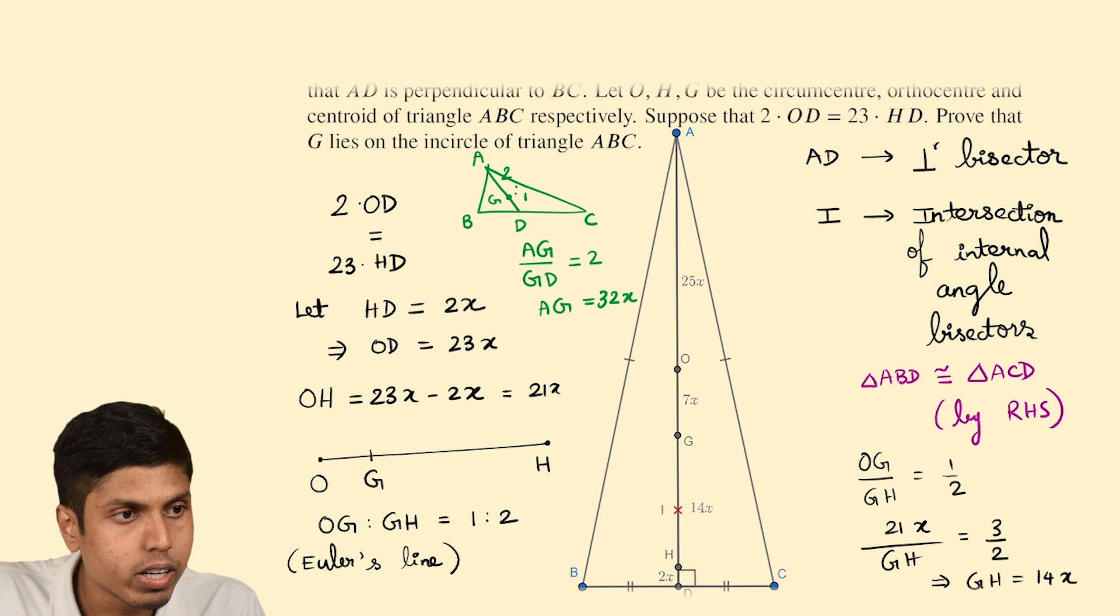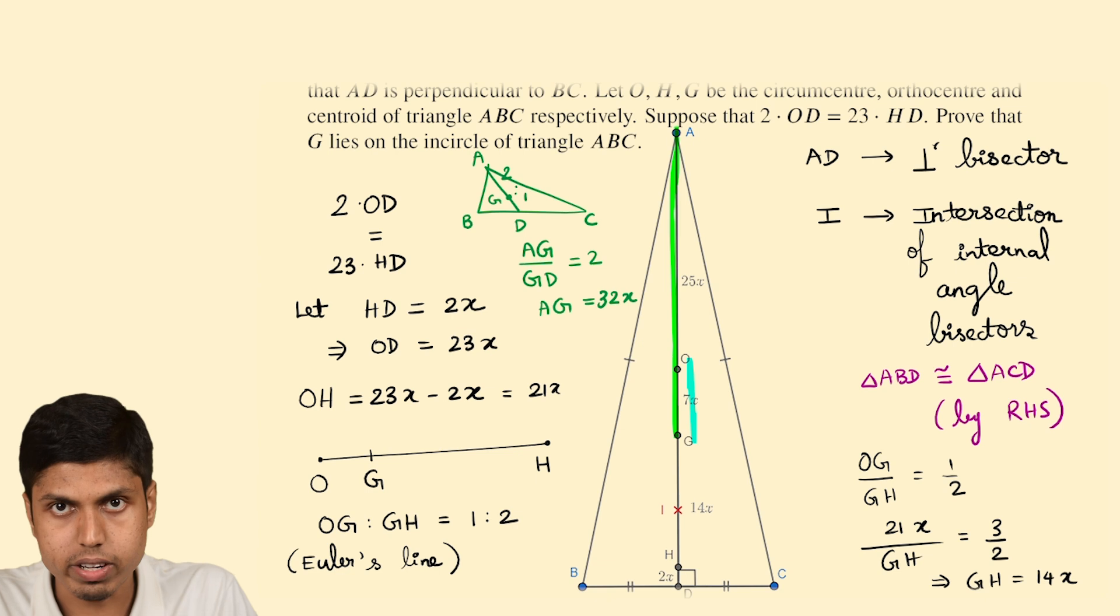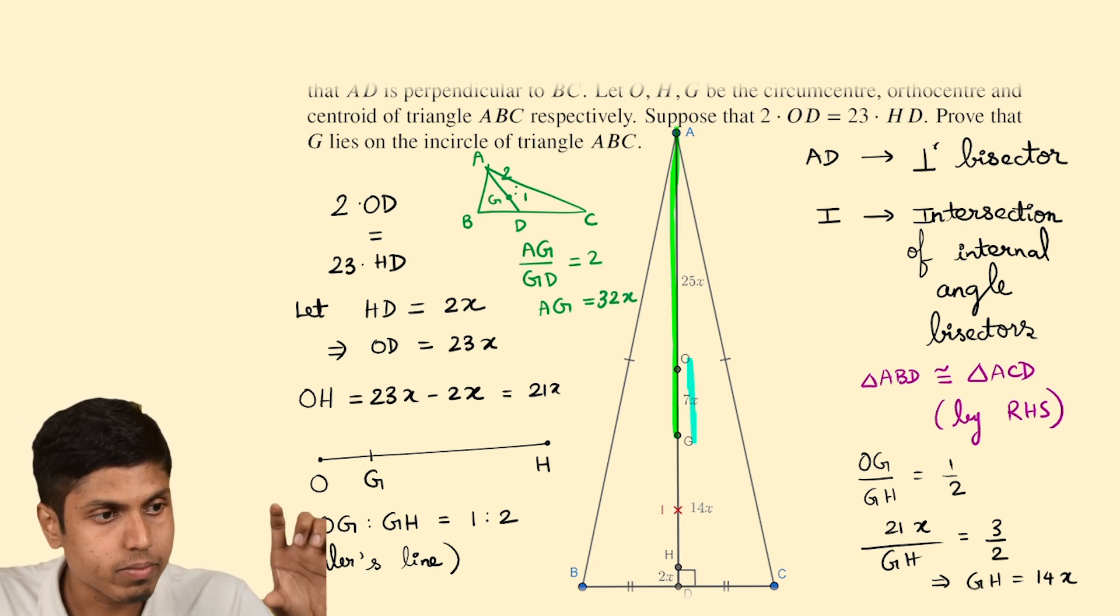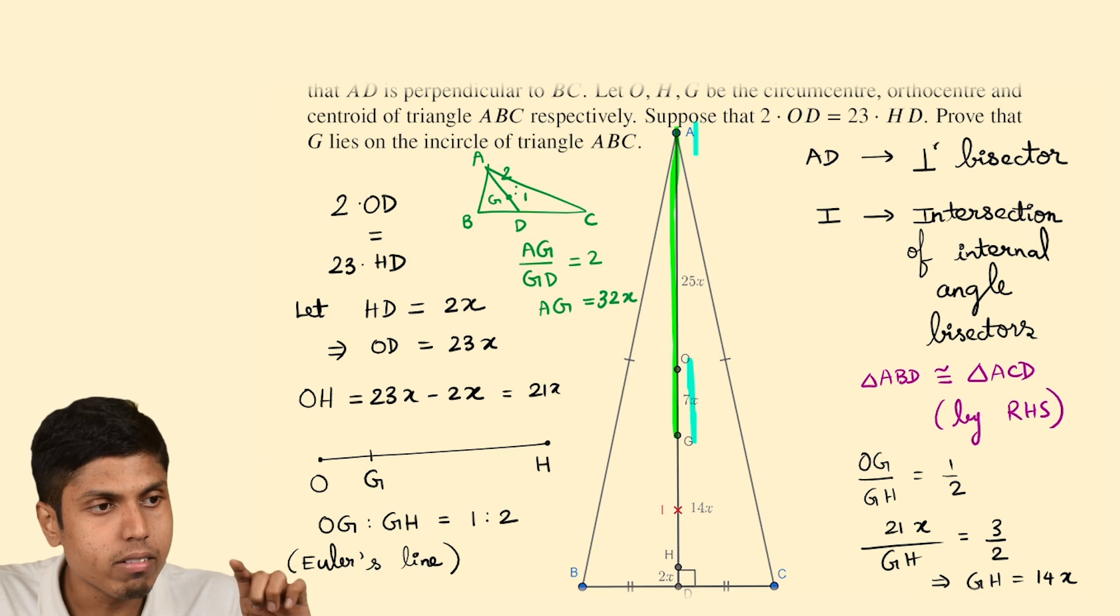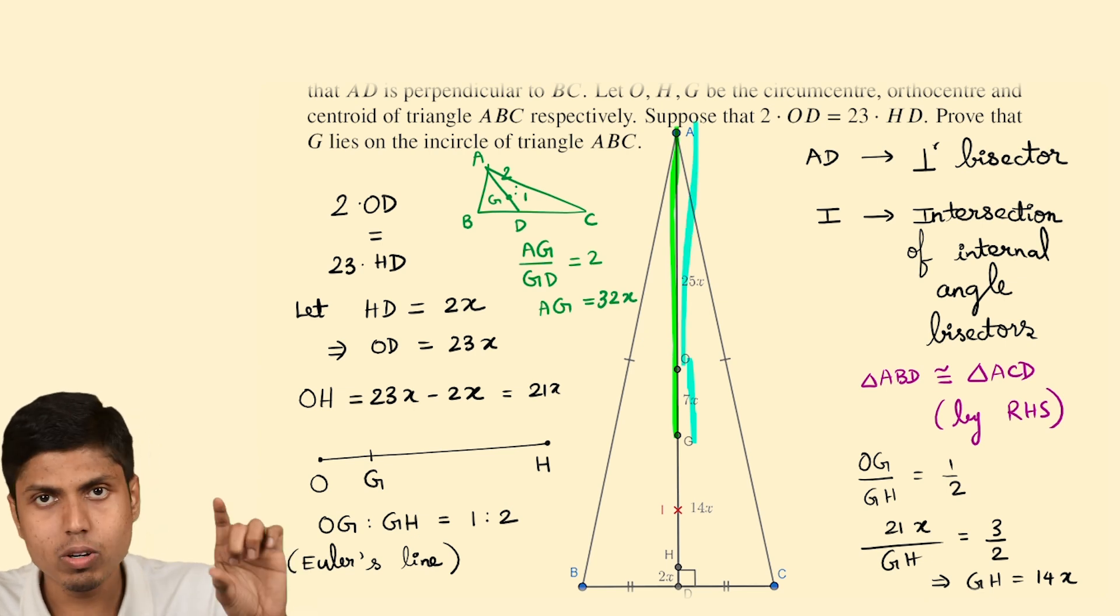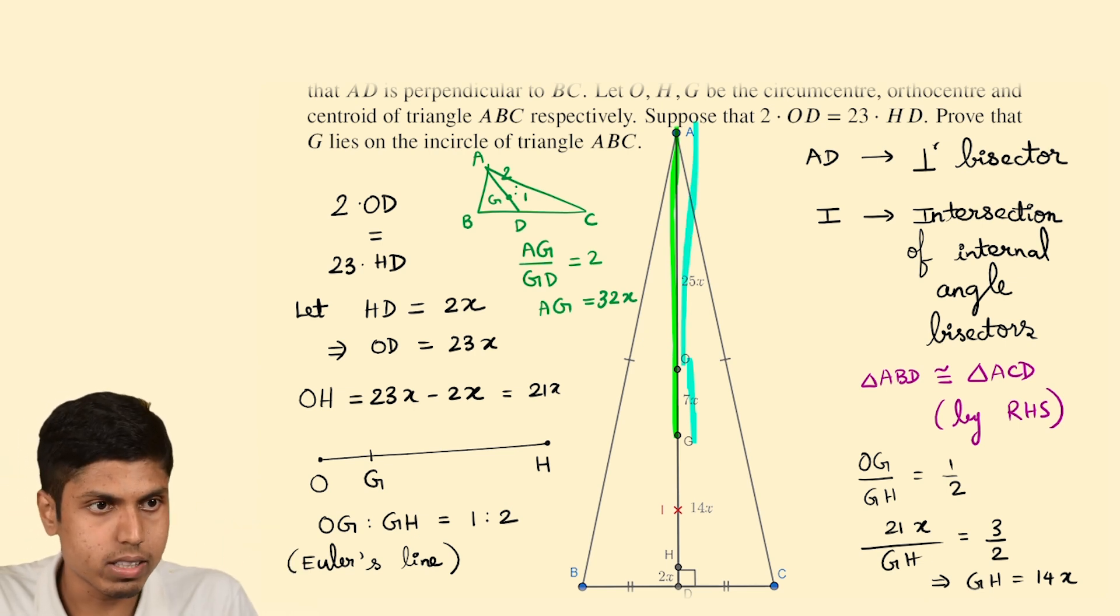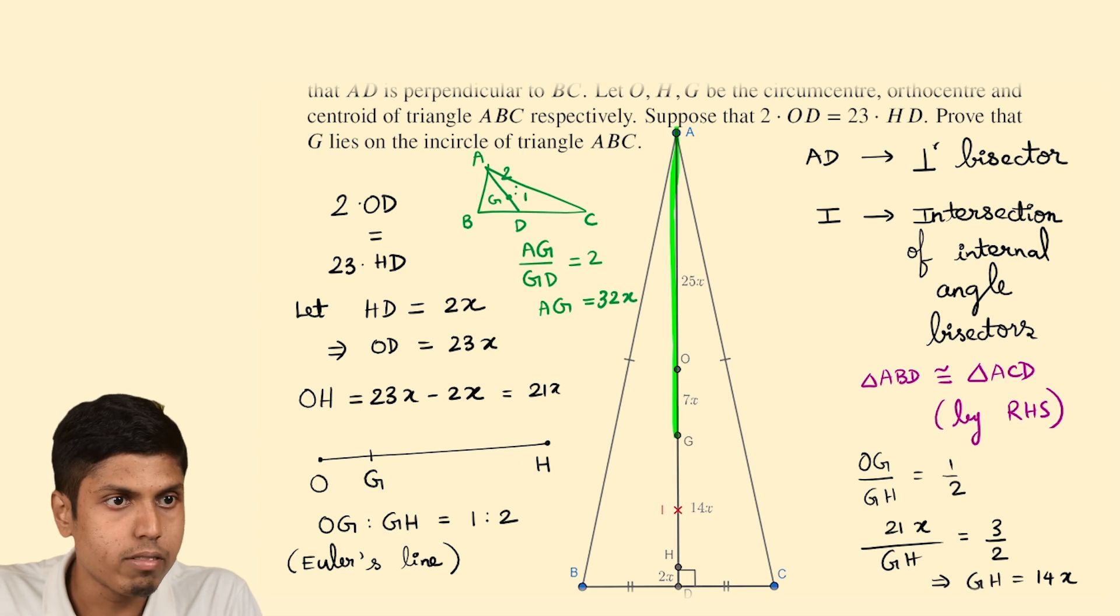So we now figured out that AG is 32. But already we know OG is 7. So if AG is 32X and OG is 7X, the remaining will be the length of AO, which is 25X. And we have delineated that as well, AO. But what's the purpose of finding the distance of vertex?